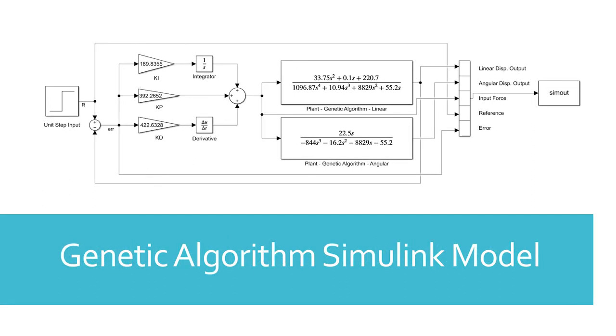The genetic algorithm Simulink model utilizes a proportional gain, kp, of 392.2652, an integral gain, ki, of 189.8355, and a derivative gain, kd, of 422.6328.